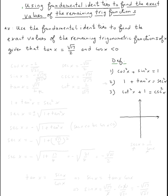Let's look at the definitions. We have cosine squared plus sine squared equals one; one plus tangent squared equals secant squared; cotangent squared plus one is equal to cosecant squared. We always start by writing the trig functions we're looking for: cosine x, sine x, tangent x, secant x, cosecant x, and cotangent x.